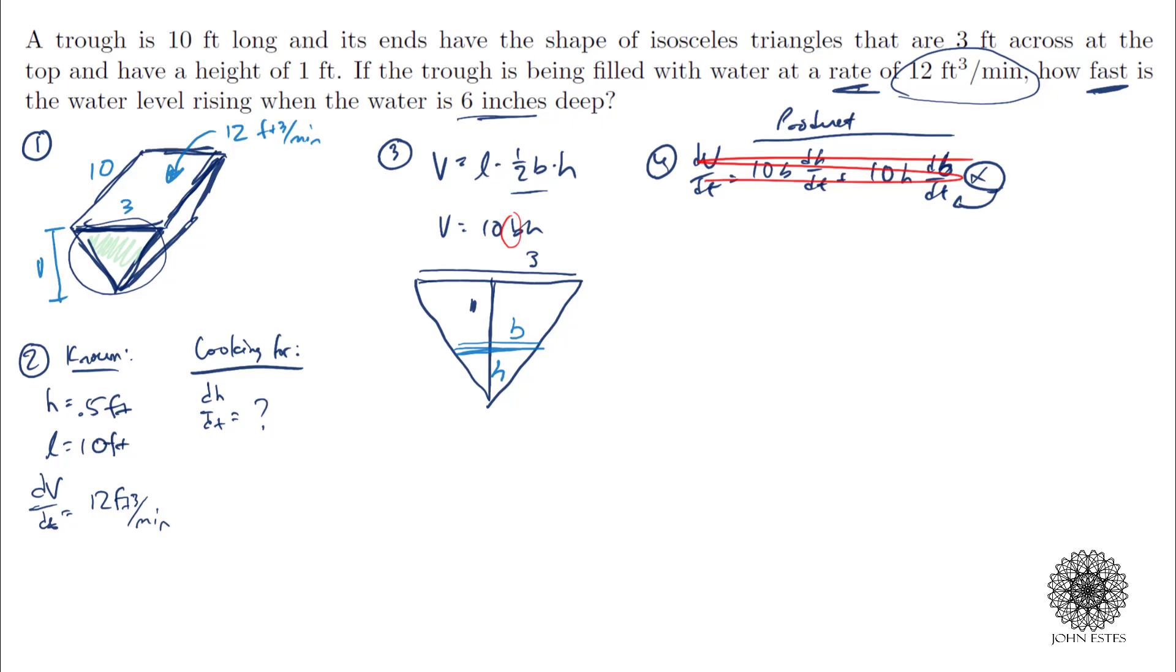So if I am at height h in my water level and I have a base b, I know some fundamental relationship here. I know that the relationship between height and one, so height over one, is the same as base over three. So that means that I could solve my base to be three h.